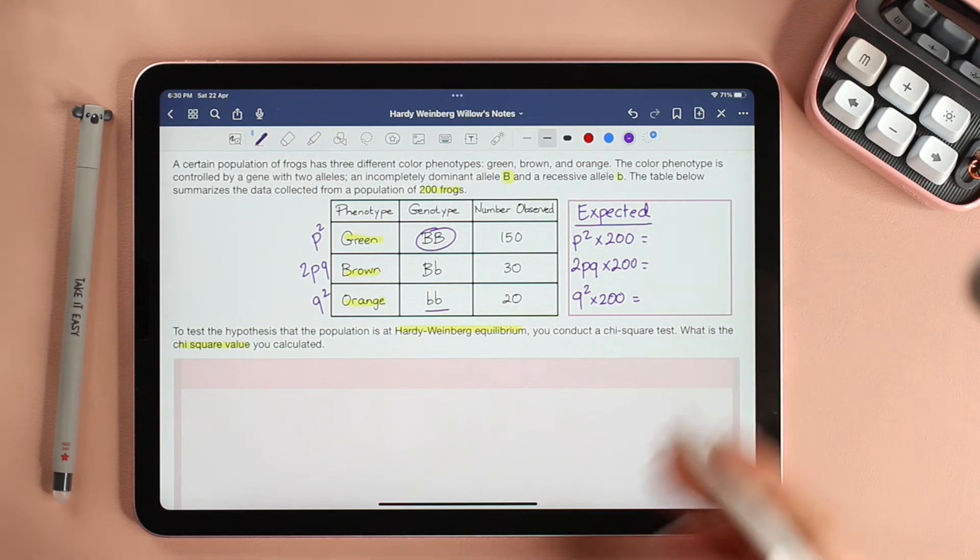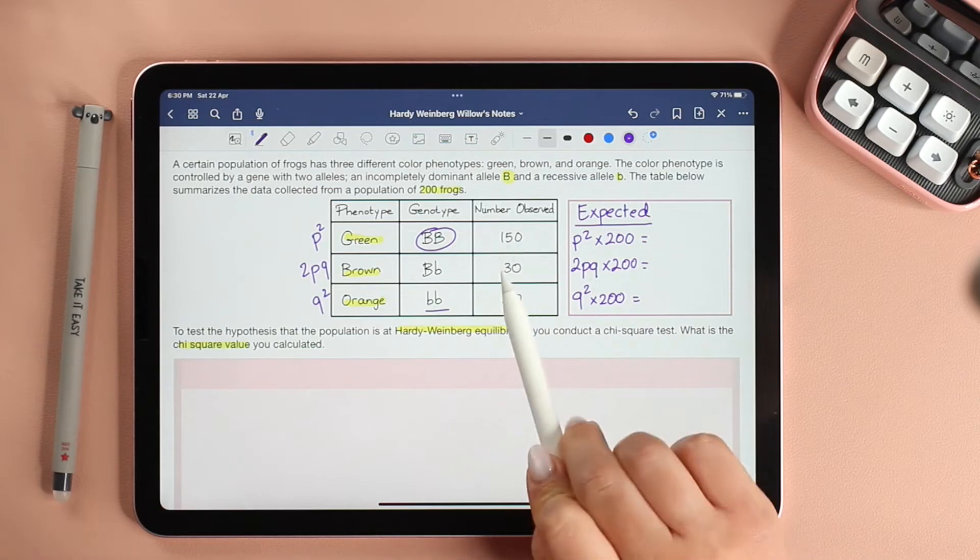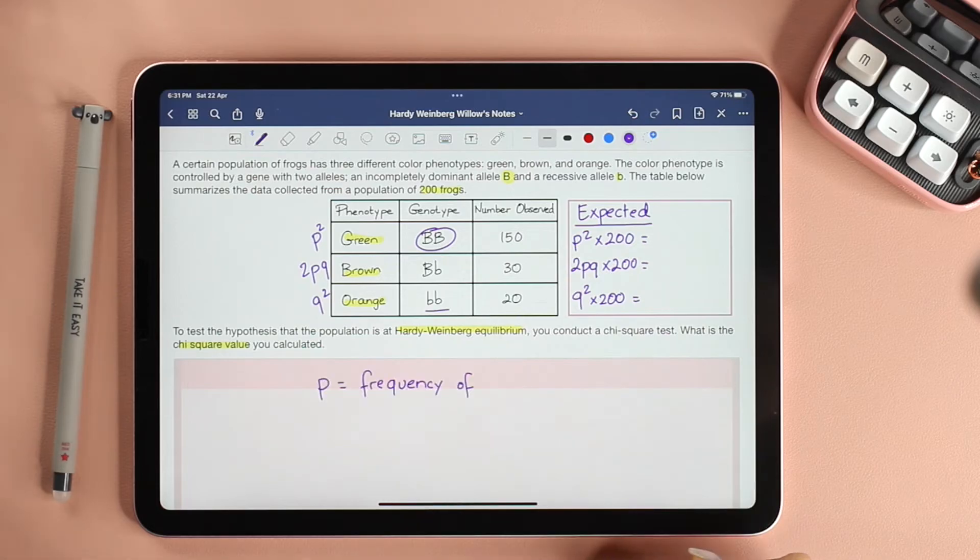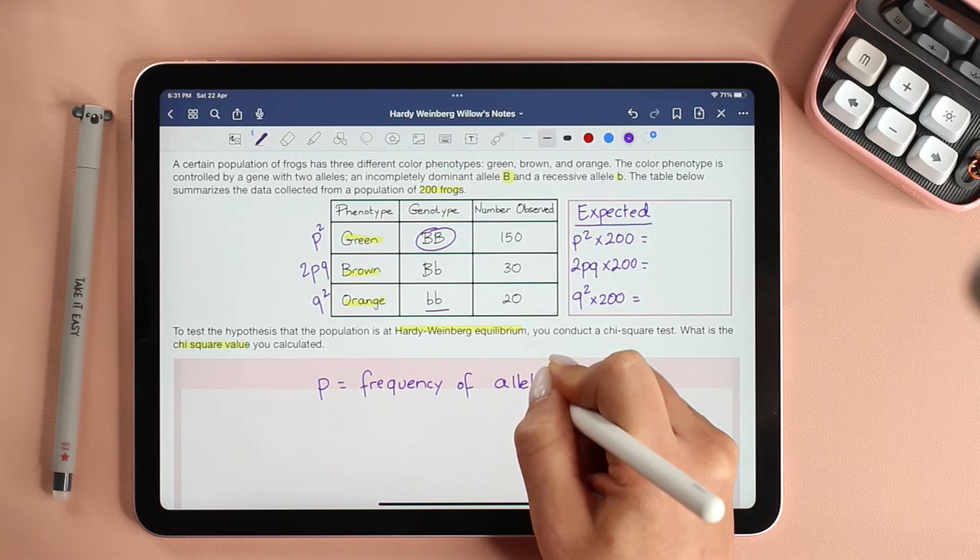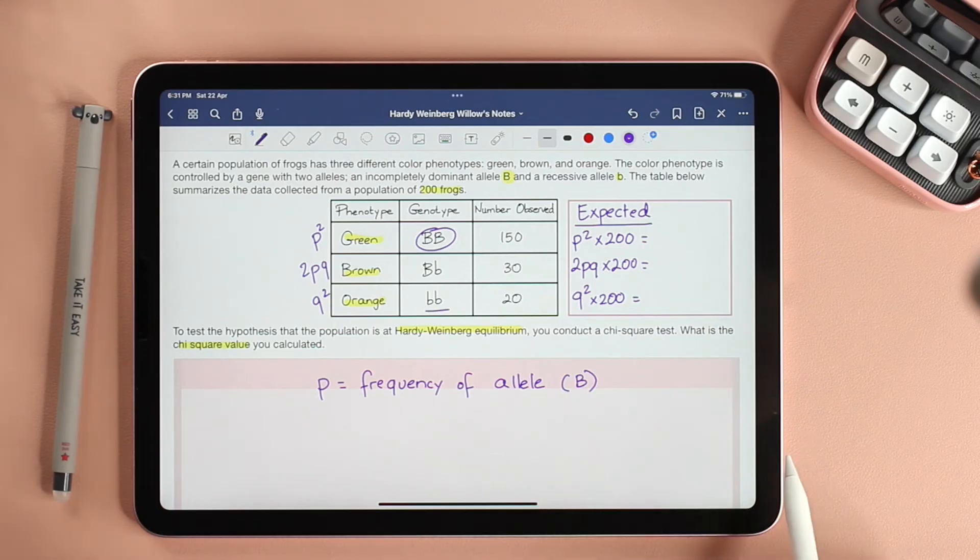But now, how do we find p² or q²? This information right here can give us the values of p and q. Let's start with p. First of all, p is the frequency of allele B. To help you understand how we're going to calculate for p, I'm going to show you a smaller population.